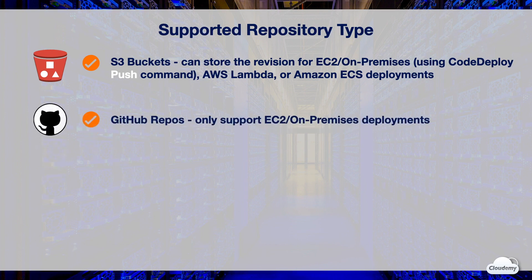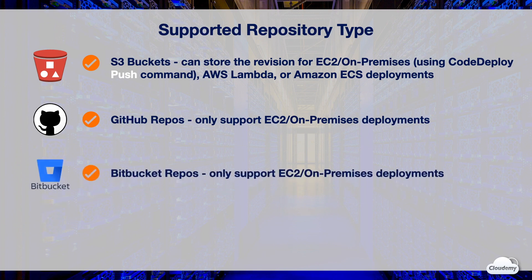You can store the application revisions in GitHub. Whenever the source code in the GitHub repository is updated, you can trigger a deployment. At the moment, only EC2 and on-premises deployments are supported with GitHub. You can deploy code to EC2 deployment groups by using the CodeDeploy pipe tool offered in Bitbucket. At the moment, only EC2 and on-premises deployments are supported with Bitbucket.